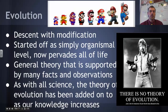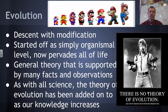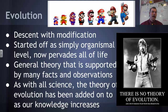Evolution — well, what is it? It is descent with modification, or at least that's how Darwin described it. It started off as a pretty simple organismal-level concept, but now it kind of pervades all of life. We talked a little bit in the last unit about how genes and genomes can evolve, so it doesn't just happen on an organismal level.